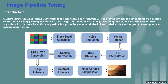This is your image pipeline tuning introduction. Camera ISP pipeline refers to the algorithms and techniques used to convert the raw image data captured by the camera sensor into a visually pleasing and accurate final image. I will be making a separate course on image pipeline tuning, so I just wanted to give you a heads up about this.